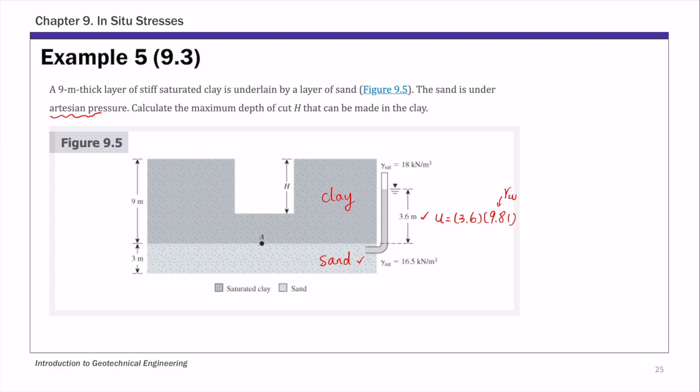We want to find the maximum depth of cut that can be made in the clay. The most critical location for this excavation is point A here. The reason being, if you look at effective stress at point A, sigma A prime is total stress sigma A minus pore pressure,